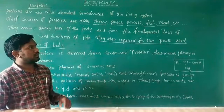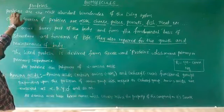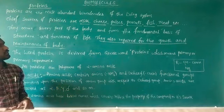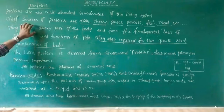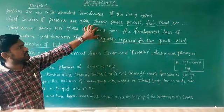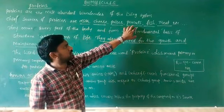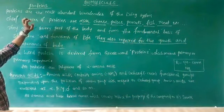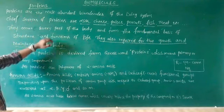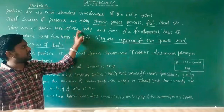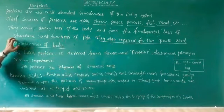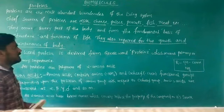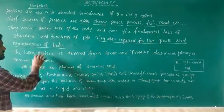Let's continue the biological chapter on the concept of proteins. What are proteins? Proteins are the most abundant molecules of the living system. Chief sources of proteins are milk, cheese, pulses, peanuts, fish, meat, etc. Proteins occur in every part of the body. They form the fundamental basis of structure and functions of life. They are also required for the growth and maintenance of the body.